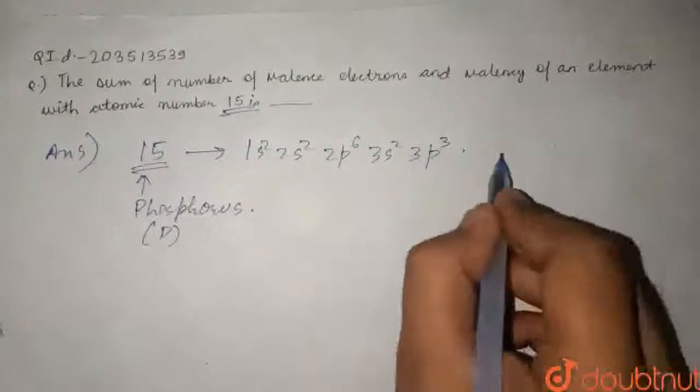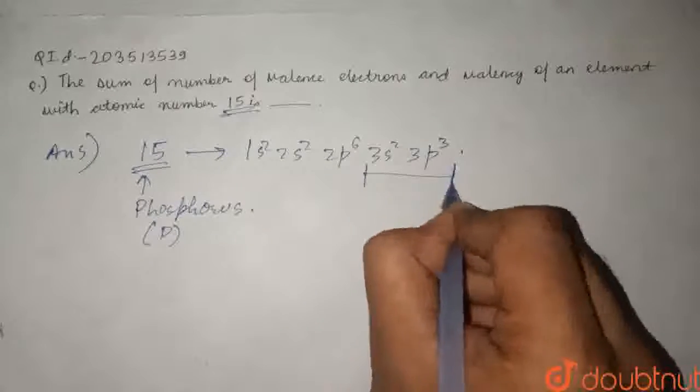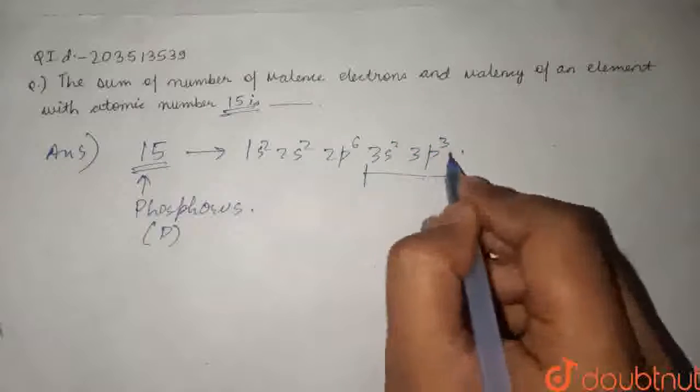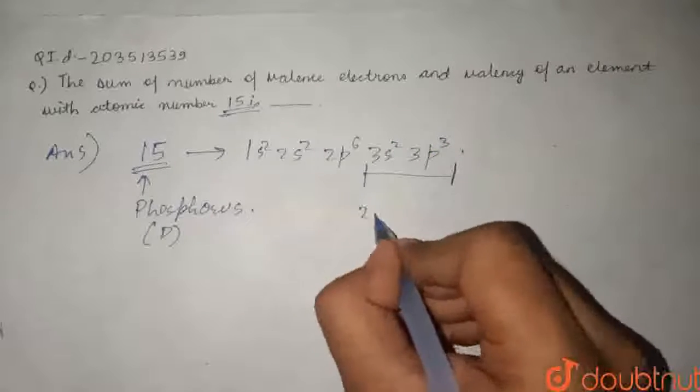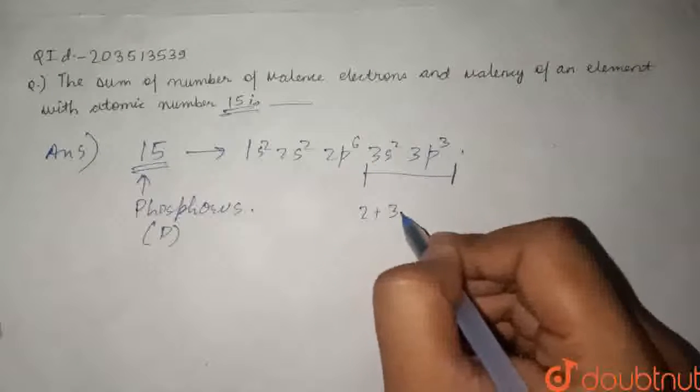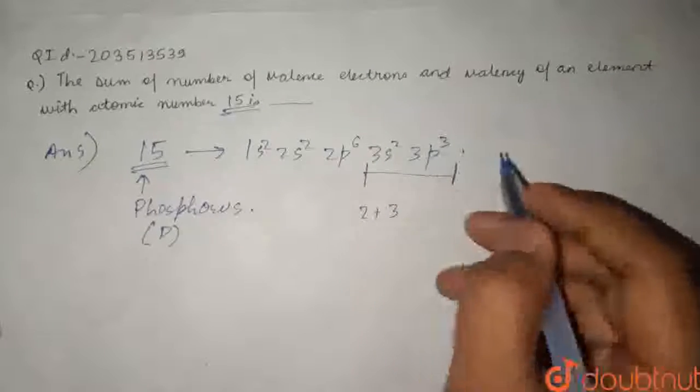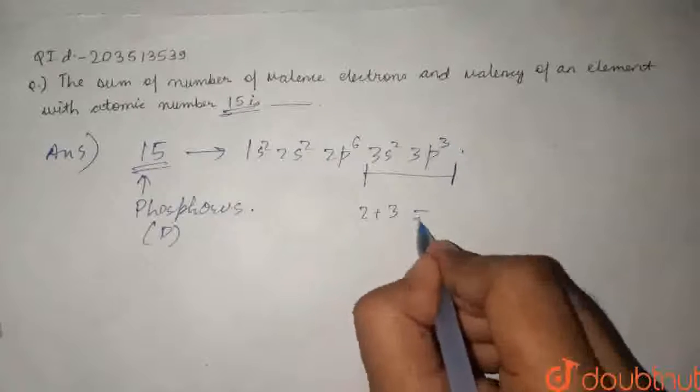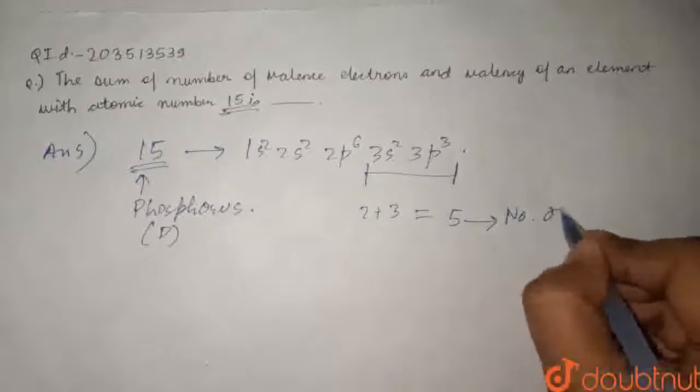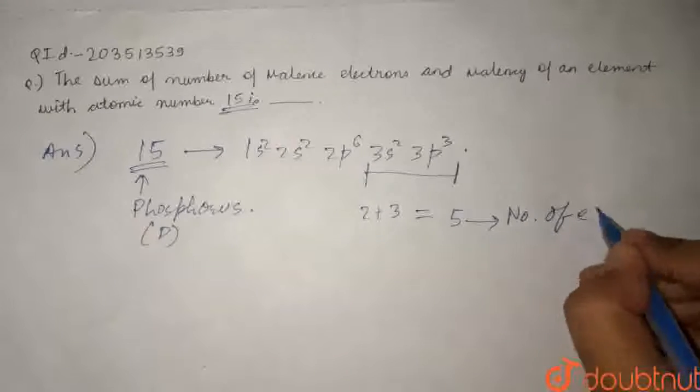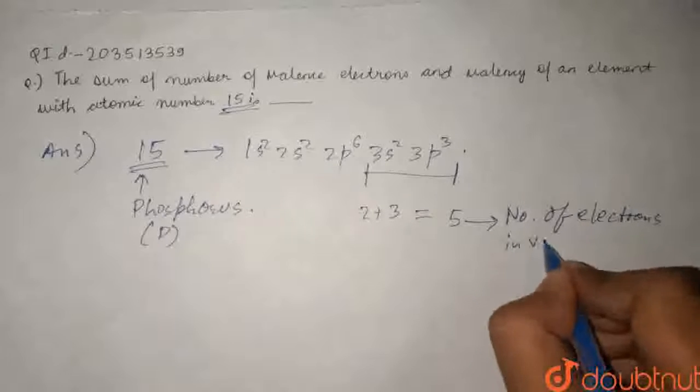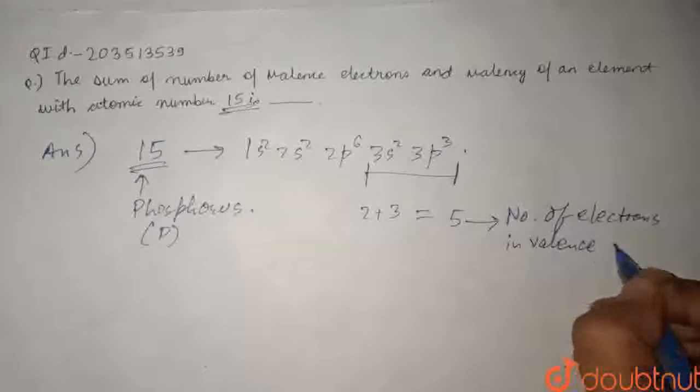Here we can see that the outermost shell is n equals 3. This outermost shell has 2 plus 3 electrons - 2 electrons in the 3s orbital and 3 electrons in the 3p orbital. So, the number of electrons in the valence shell is equal to 5.